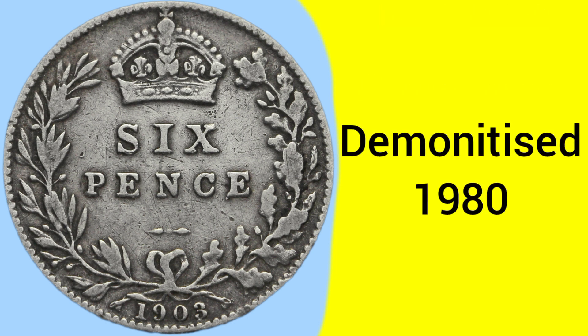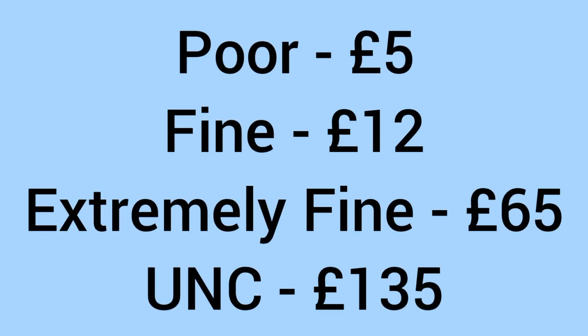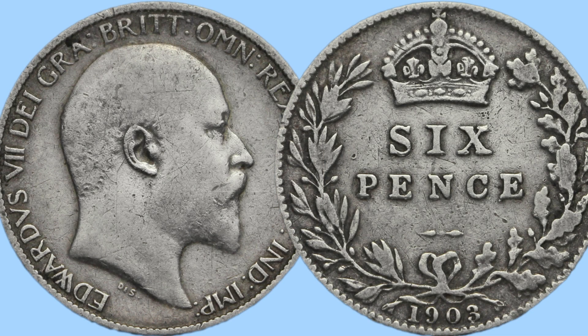The coin was demonetised in 1980 after serving as a two-and-a-half pence piece for a short while after decimalisation. Moving on to the value of this coin today for collectors: in poor condition it will sell for around £5, in fine condition around £12, extremely fine £65, and £135 in uncirculated grade. A very vast range of prices, all dependent on condition, with the more worn coins being very affordable if you are looking to purchase one.